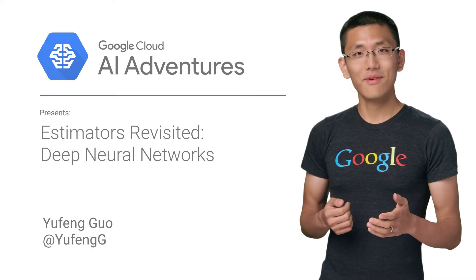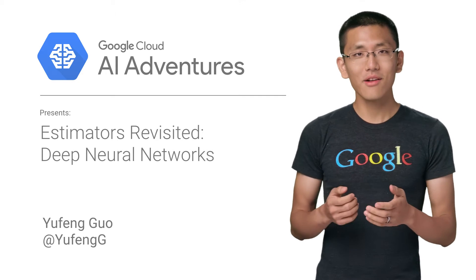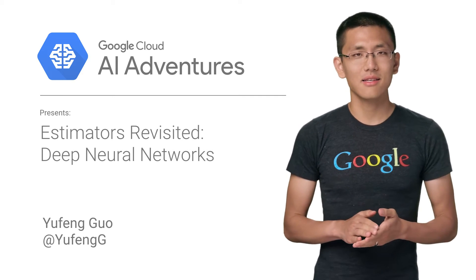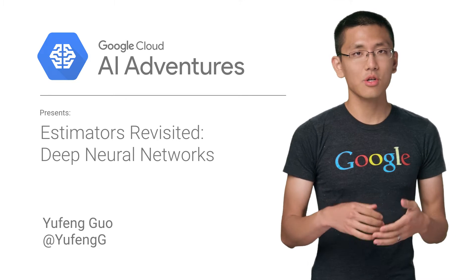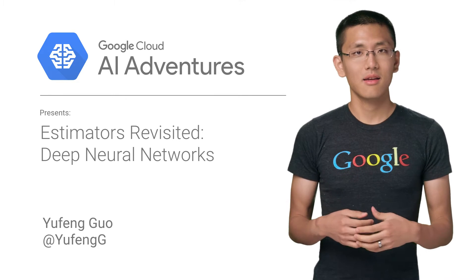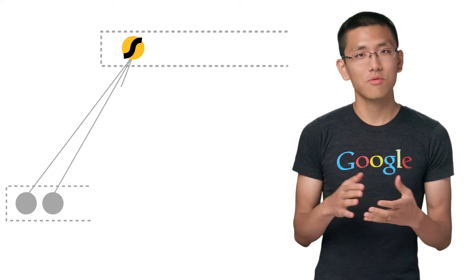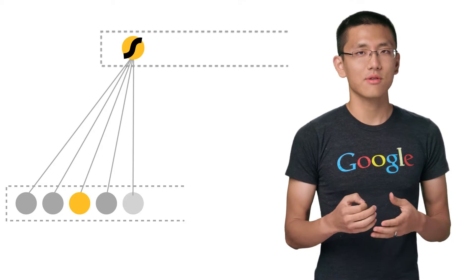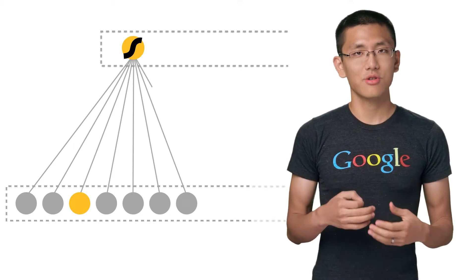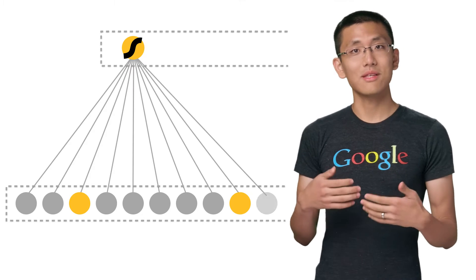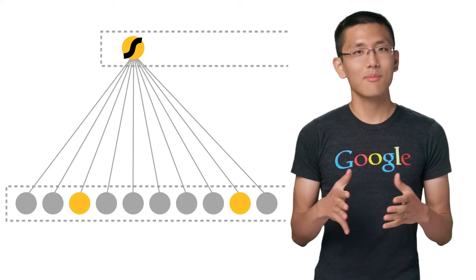In this episode of Cloud AI Adventures, find out how to train on increasingly complex datasets by converting a linear model to a deep neural network. As the number of feature columns in a linear model grows, it can be increasingly difficult to achieve high accuracies in your training, as the interactions between different columns get more complex.